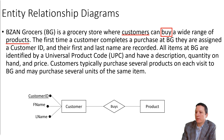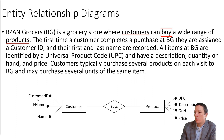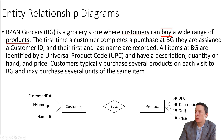We have some attributes of customers: their customer ID, their first name, and their last name. You can see here we've underlined the customer ID to identify that this is our unique identifier for the customer — it's going to be our primary key. We also have some attributes about a product: the universal product code or UPC, description, quantity on hand, and price. And we've chosen UPC here as our unique identifier.